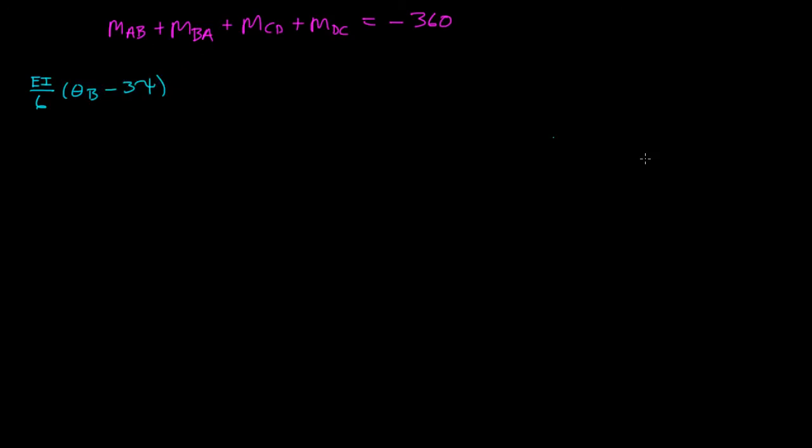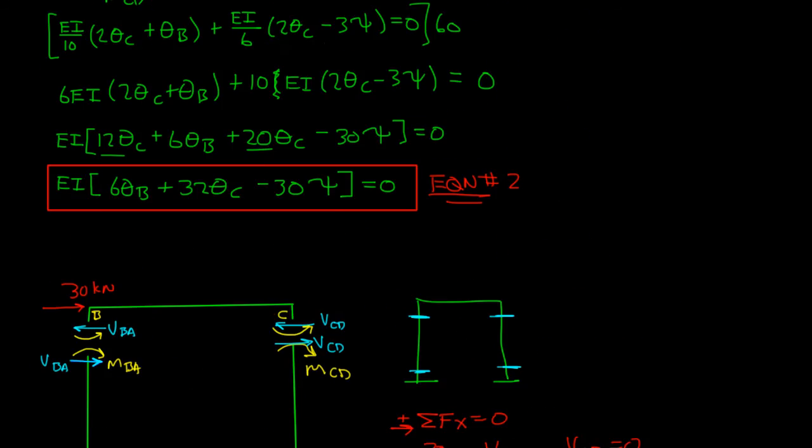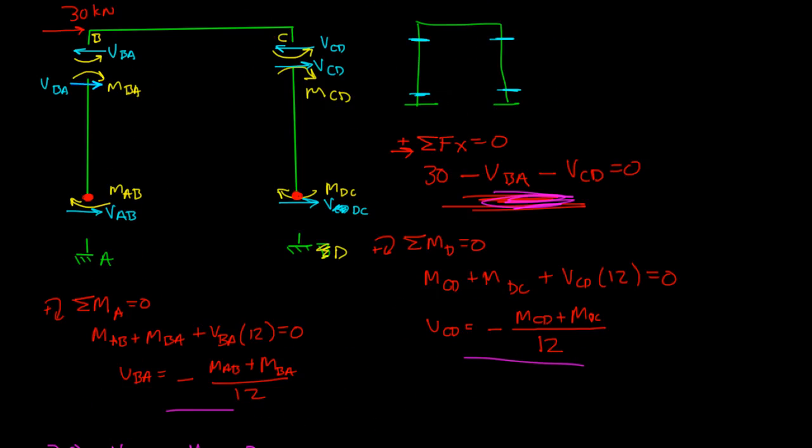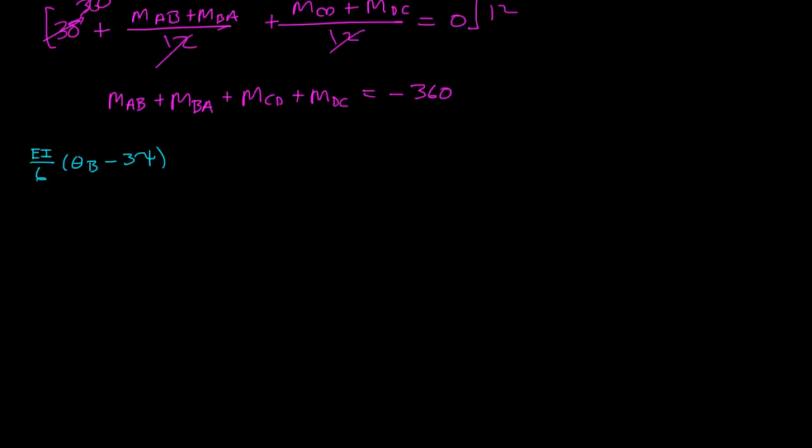I get EI over 6 theta B minus 3 psi, and that's MAB. MAB was EI over 6 theta B minus 3 psi. And let me just make sure I'll keep track of this as I'm going along. And then, MBA was plus, now we're doing this one, EI over 6, 2 theta B minus 3 psi.